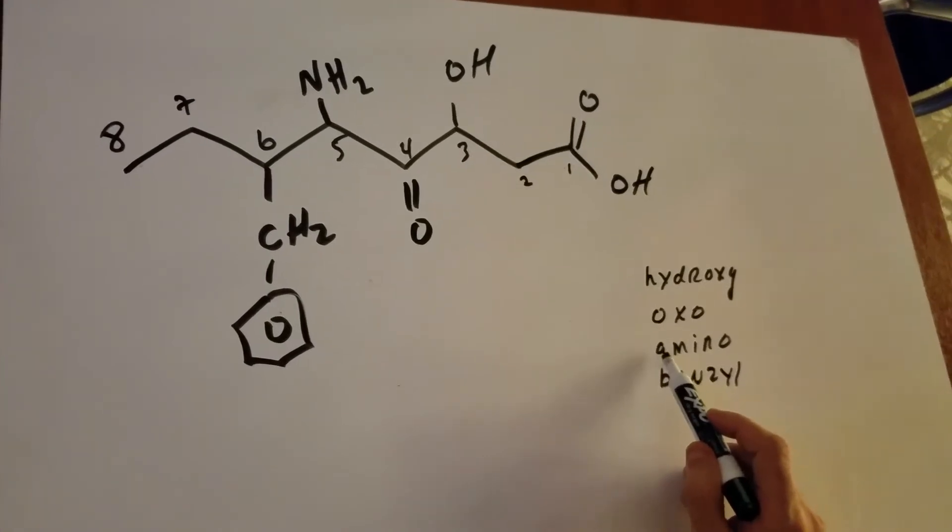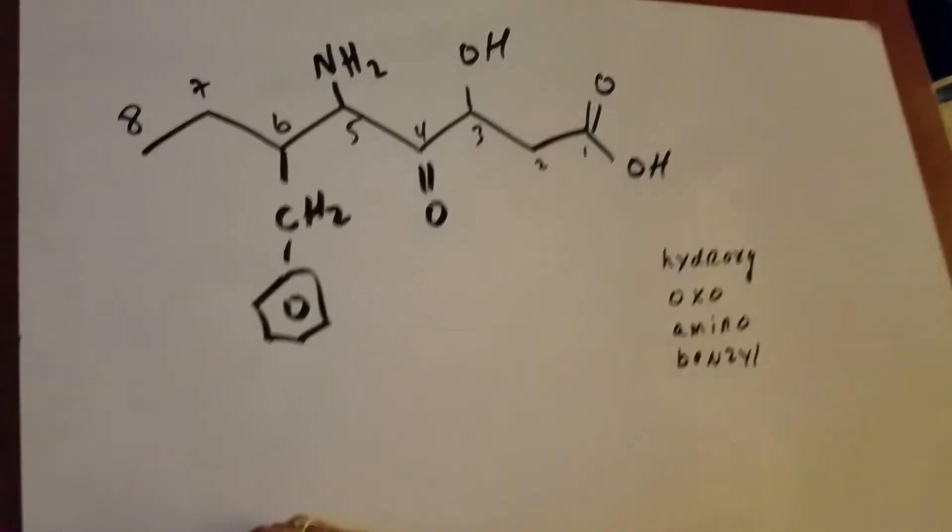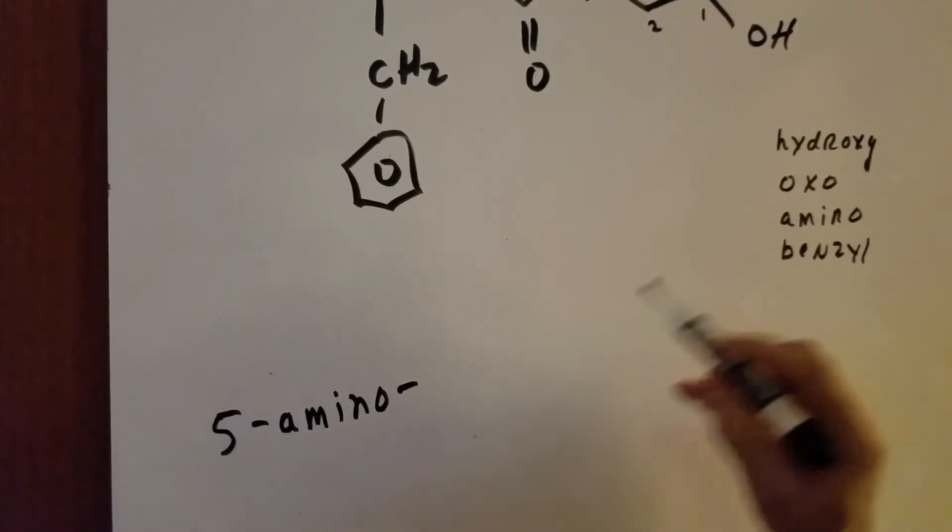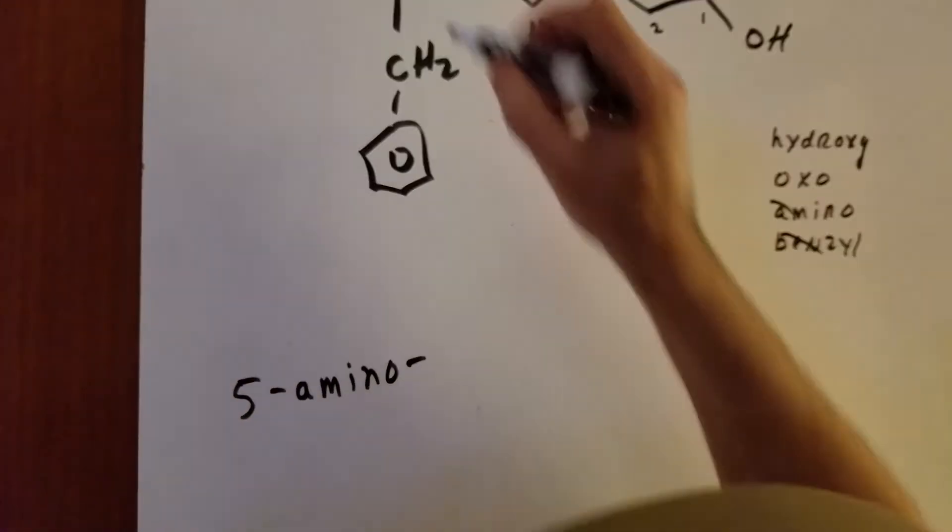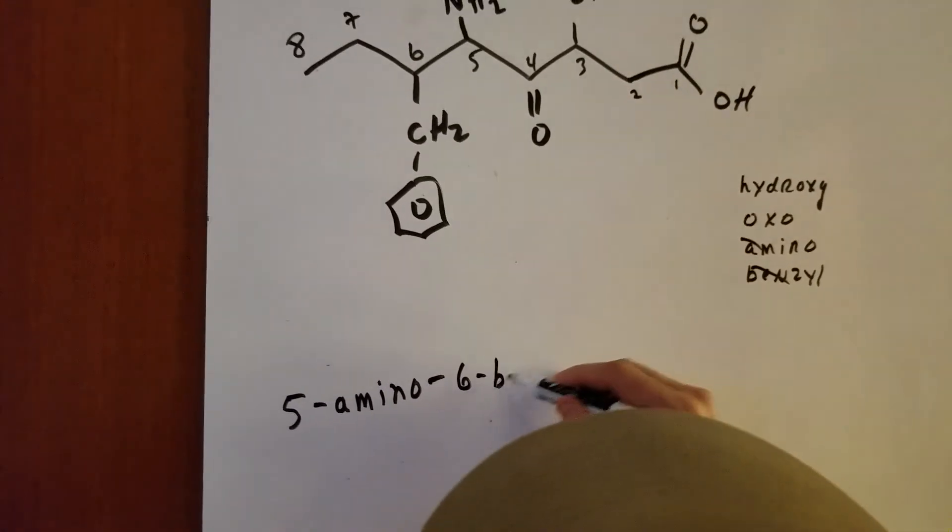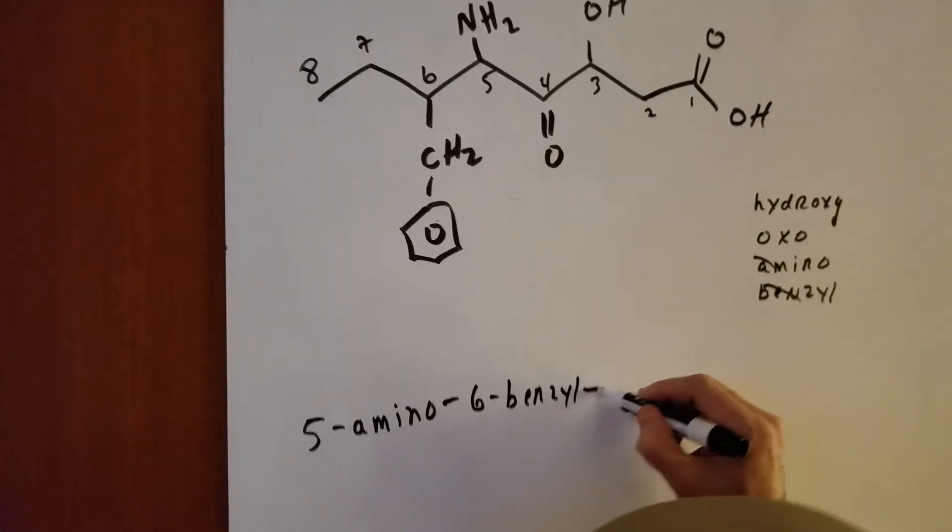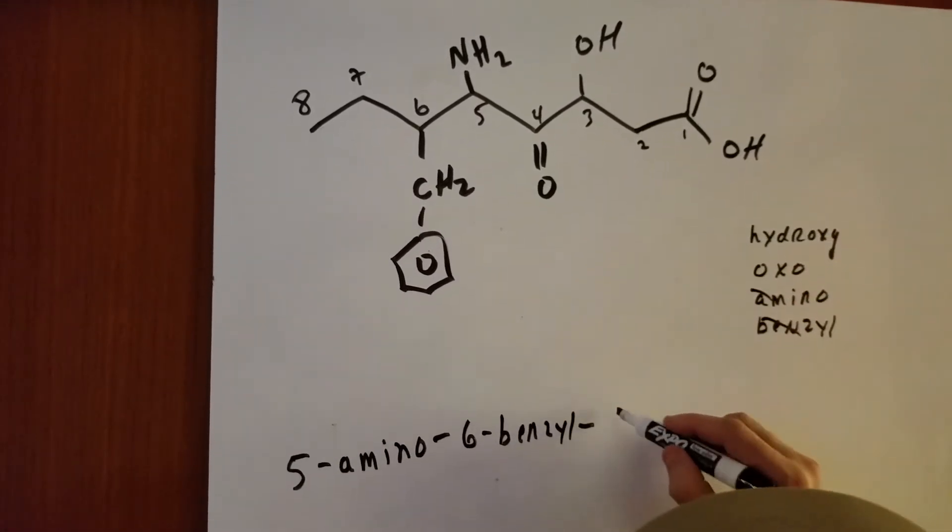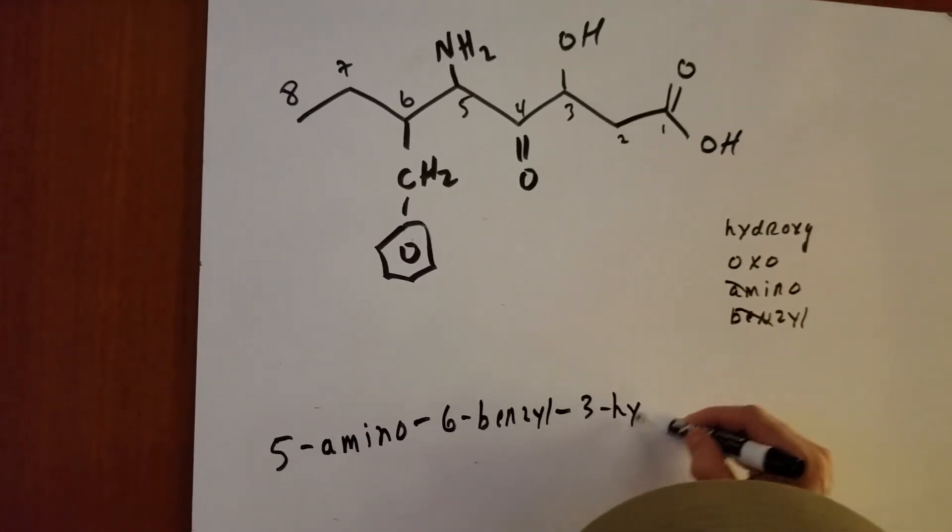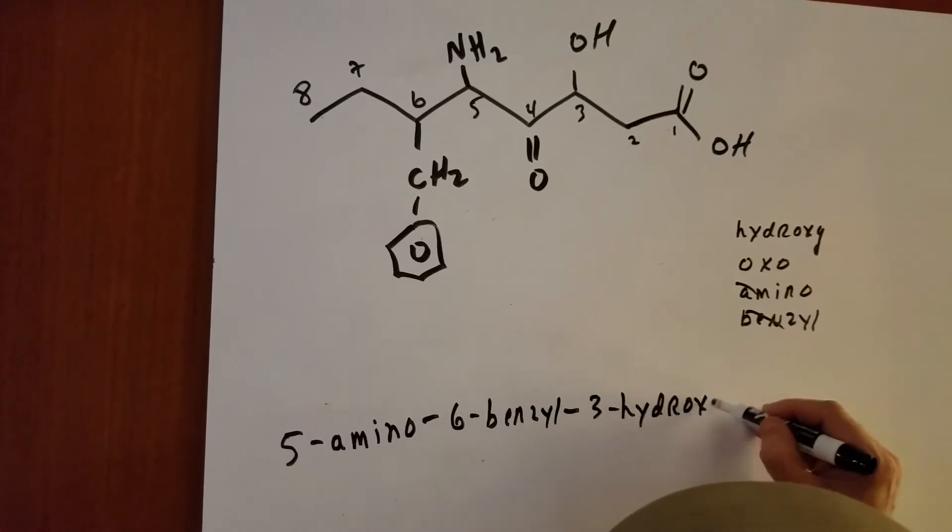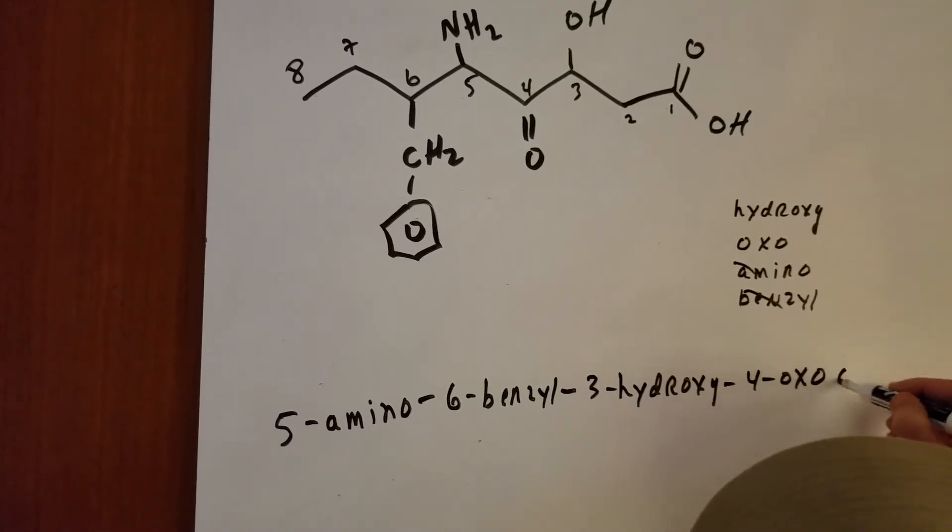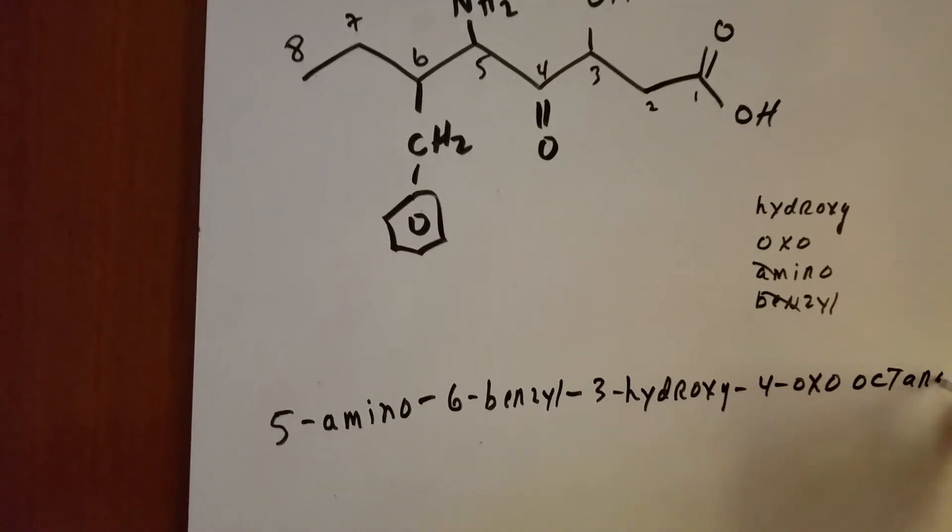So as you can see, in alphabetical order, the A comes first. So I'm going to start off by calling this 5-amino. After the A, we're going to go to the B, and we're going to see that on the number 6 carbon is benzyl. And then on number 3, we have an H, so that's going to come next. A 3-hydroxy, and then 4-oxo, and we have octanoic acid.